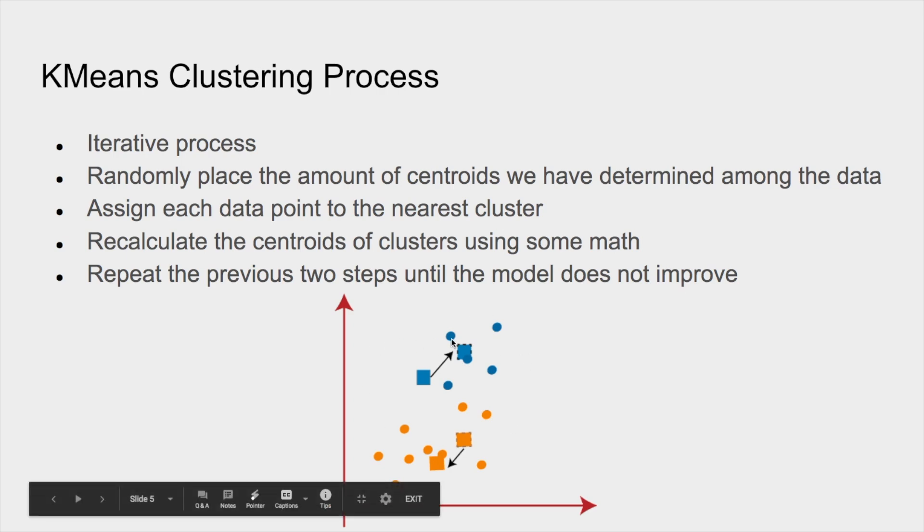Essentially, we're just going to assign each data point to the nearest centroid. And it's going to do this until the model doesn't improve or you can't reassign - you can't make the within group sum of squares smaller, and you can't make the between groups sum of squares bigger.